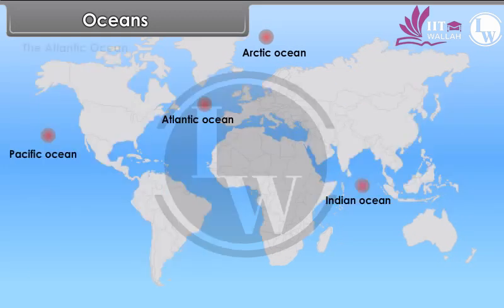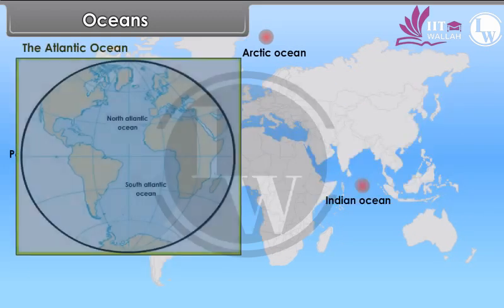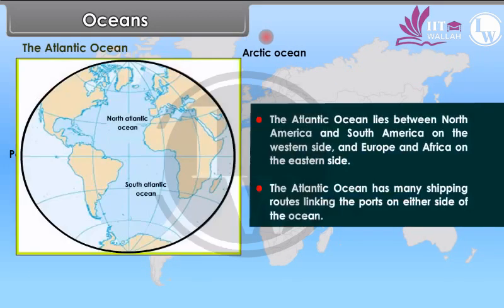The Atlantic Ocean lies between North America and South America on the western side, and Europe and Africa on the eastern side. The Atlantic Ocean has many shipping routes linking the ports on either side of the ocean.